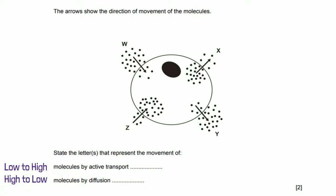From this piece of information we know that Y and Z is moving from a low to high concentrated area which means it must be active transport. Similarly W and X are going from a high to low concentrated area so that has to be diffusion.